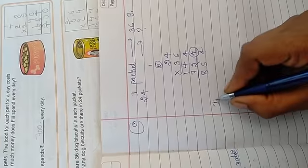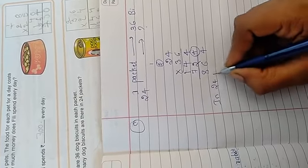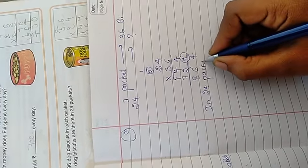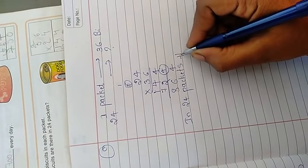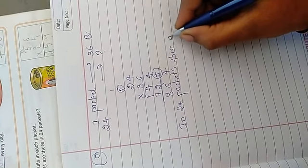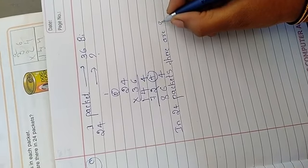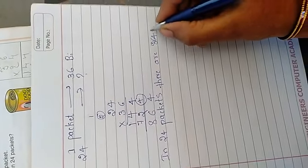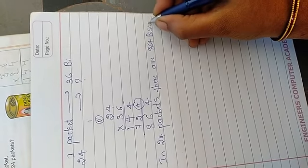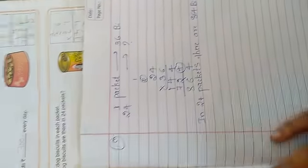So, in 24 packets, there are 864 biscuits. Okay. I hope it is clear.